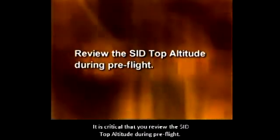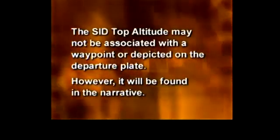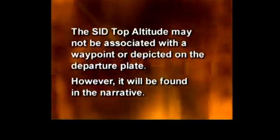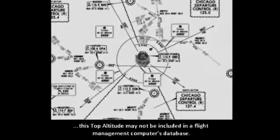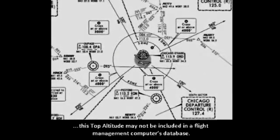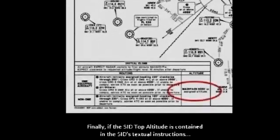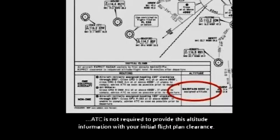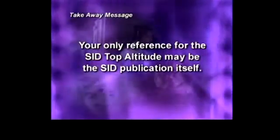It is critical that you review the SID top altitude during preflight. The top altitude on a SID may or may not be associated with a waypoint or otherwise depicted on the departure plate, but at a minimum it will be found in the narrative of the procedure. For operational reasons, ATC may assign an altitude that is different from the published top altitude. Furthermore, when not associated with a waypoint, this top altitude may not be included in a flight management computer's database. Finally, if the SID top altitude is contained in the SID's textual instructions, ATC is not required to provide this altitude information with your initial flight plan clearance. So remember, your only reference for this critical SID top altitude information may be the SID publication itself.